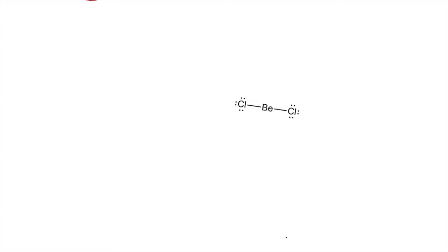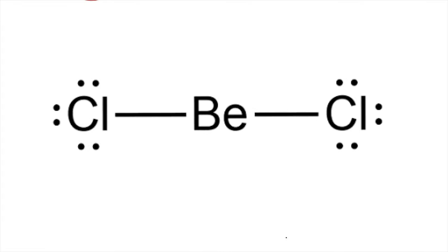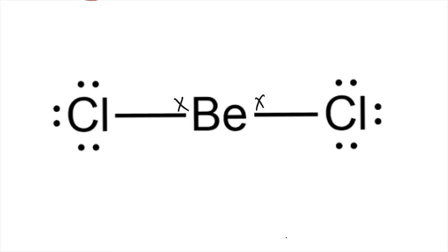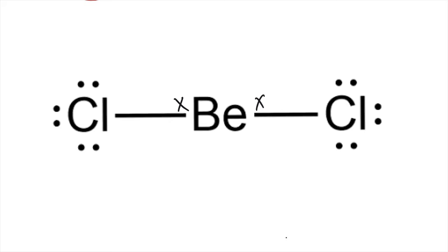The other example is beryllium dichloride. Beryllium is a member of group two and has two valence electrons involved in two covalent bonds. Beryllium has no unshared or lone electrons at the center. This is why beryllium dichloride has a linear shape with 180 degrees.